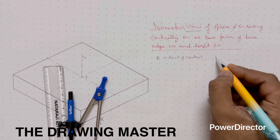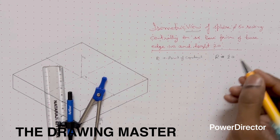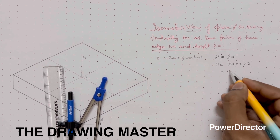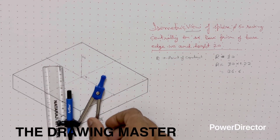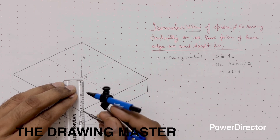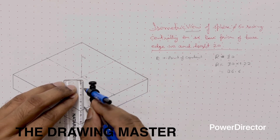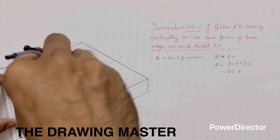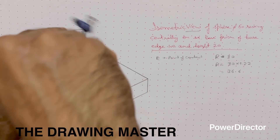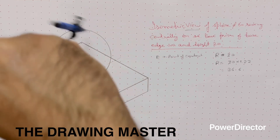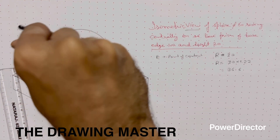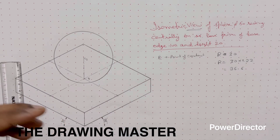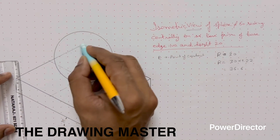The radius is 30, so I will multiply it by 1.22, which gives 36.6. I will draw the circle with radius 36.6. I will tell you the reason for this. From this center — the center of the sphere — we will draw a circle with radius 36.6. Now you can see the point of contact is hidden, and obviously when you see the isometric view of the object, the point of contact will not be visible.